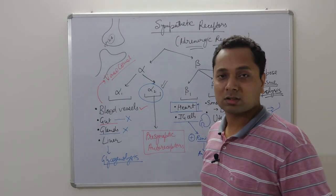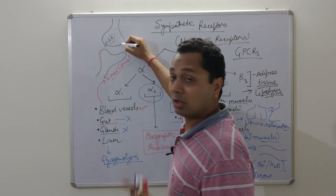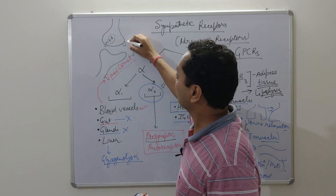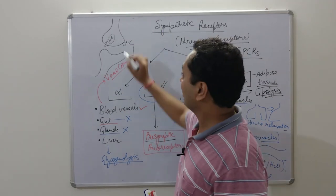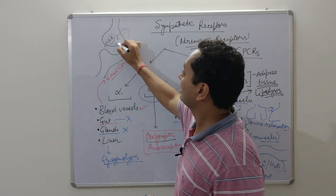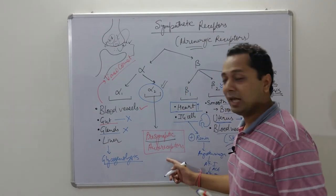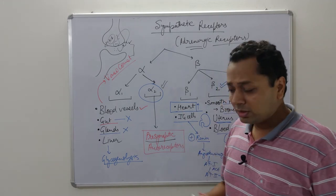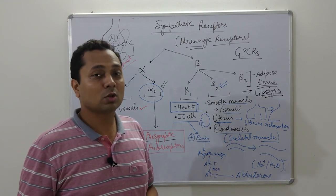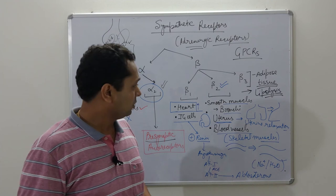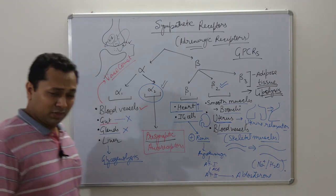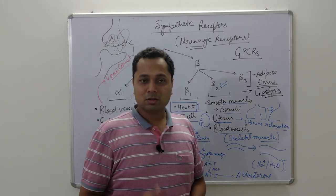The alpha-2 receptors detect that the action has been completed and that noradrenaline release needs to stop. These alpha-2 receptors are present pre-synaptically — before the synapse. When noradrenaline binds to these alpha-2 receptors, it inhibits the further release of noradrenaline, acting as an auto-regulatory feedback mechanism. Alpha-2 receptors also exist post-junctionally, but their post-synaptic action is not as significant.